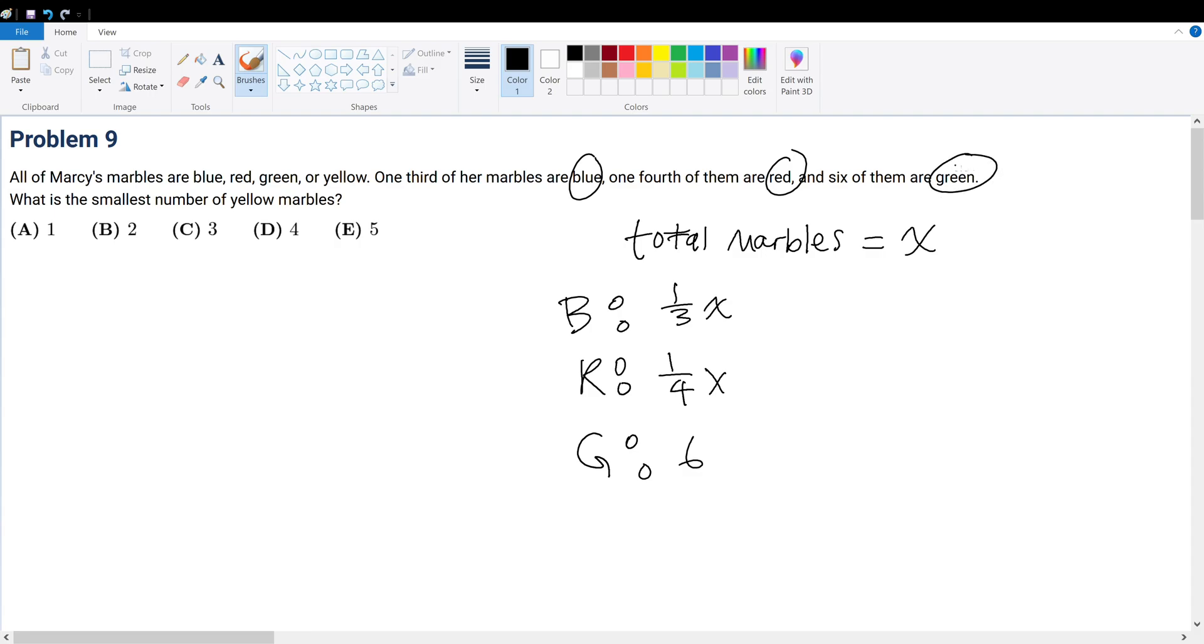What about the yellow ones? One-third are blue, one-fourth are red, six are green. What is the smallest number of yellow marbles that she has? So that means the number of yellow marbles must be X minus one over three X minus one over four X minus six.